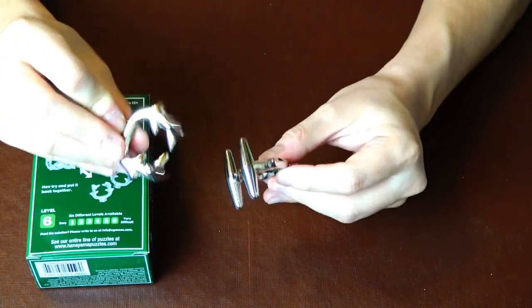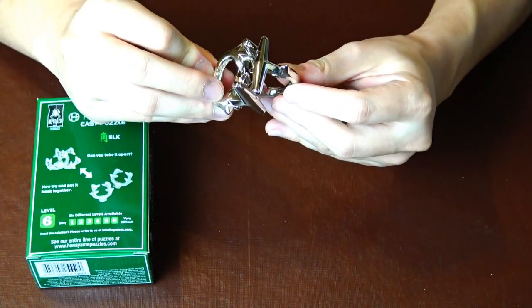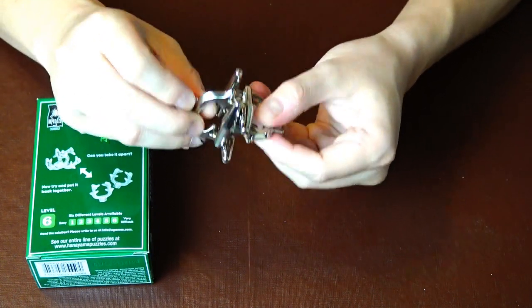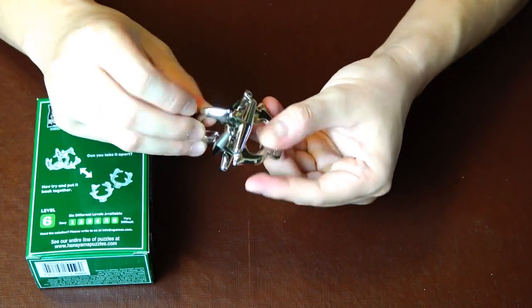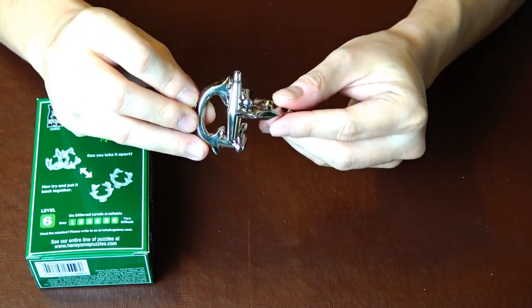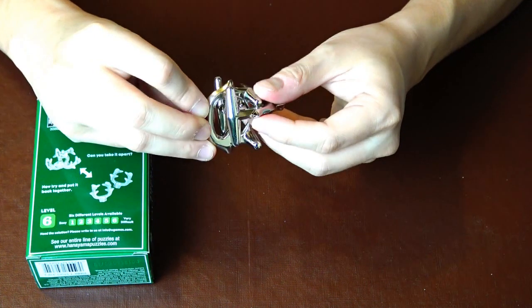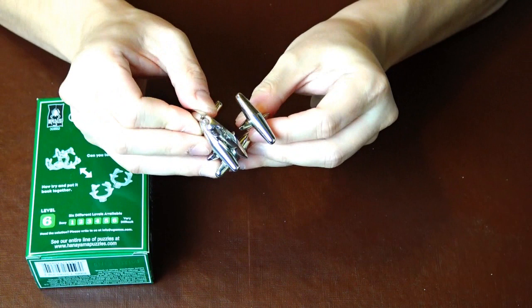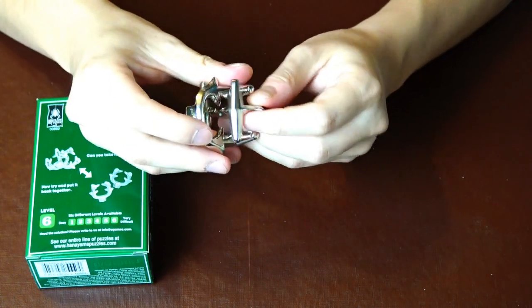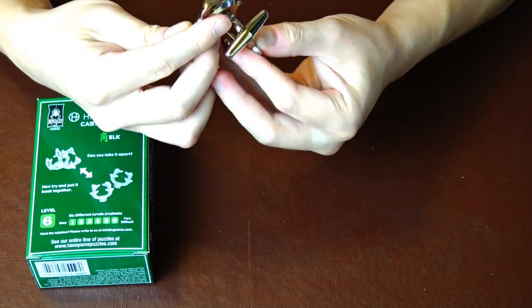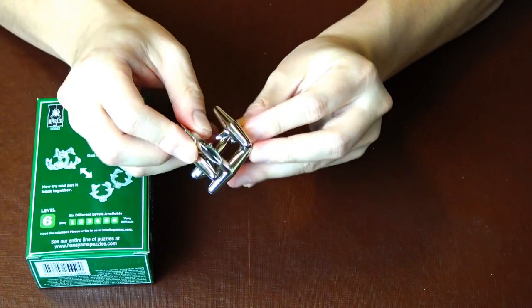And that is the elk puzzle everybody, elk puzzle by Hanayama. But here's the thing - you do have to put it back together, which is why this was so frustrating. It took me quite a while to put it back together too. Getting it to come apart is really easy but bringing it back to position one is a little bit tricky. You have to find which side slides correctly.